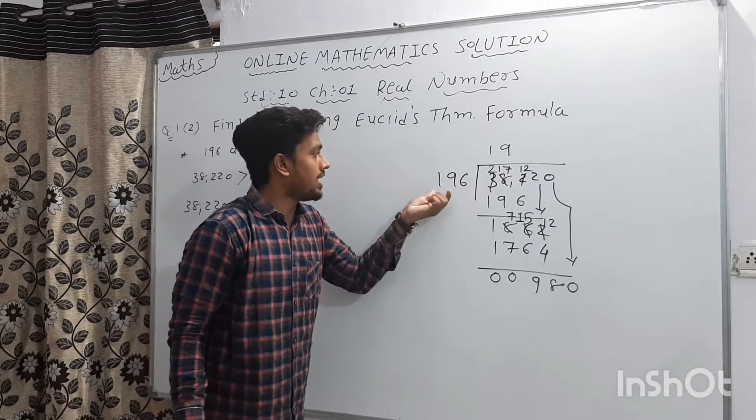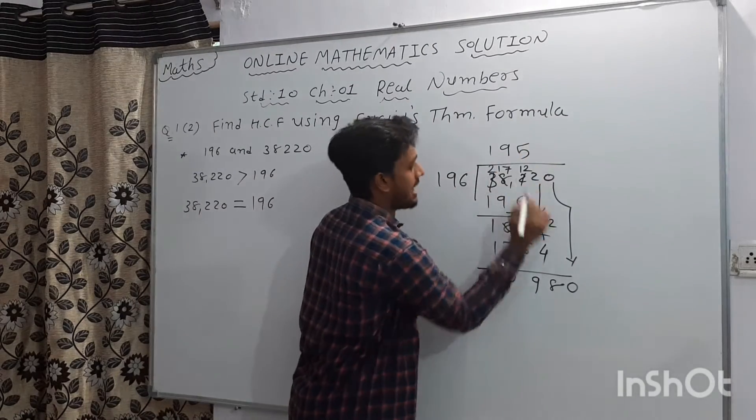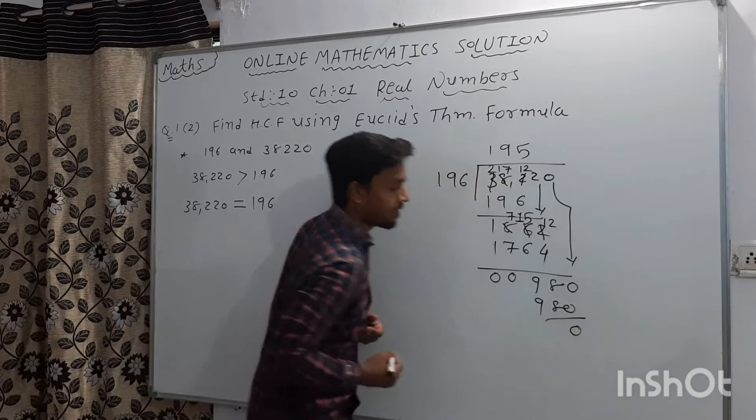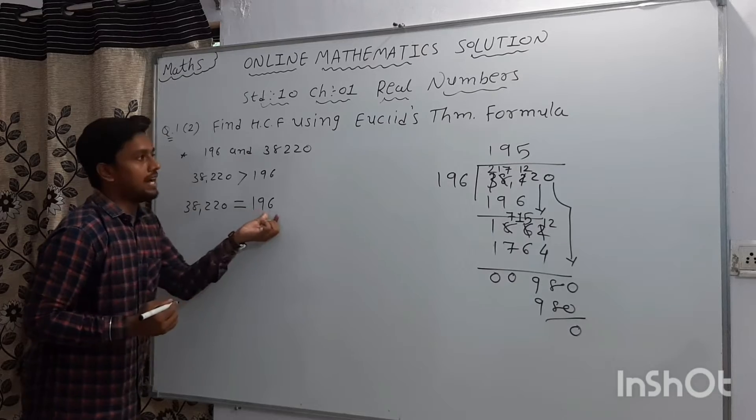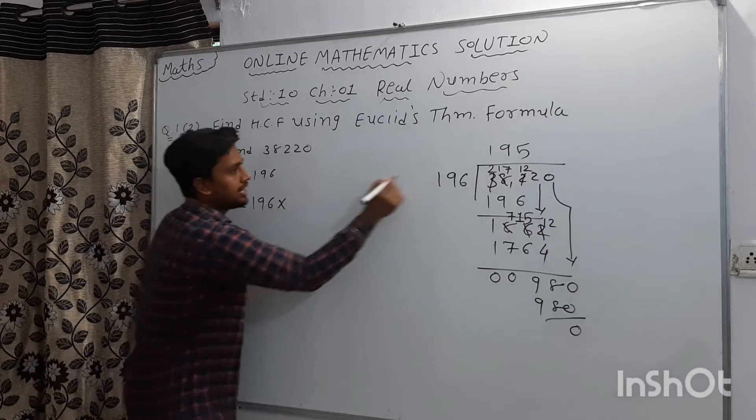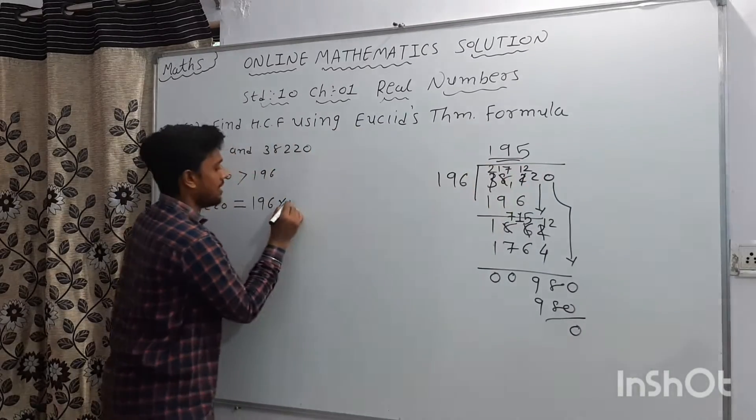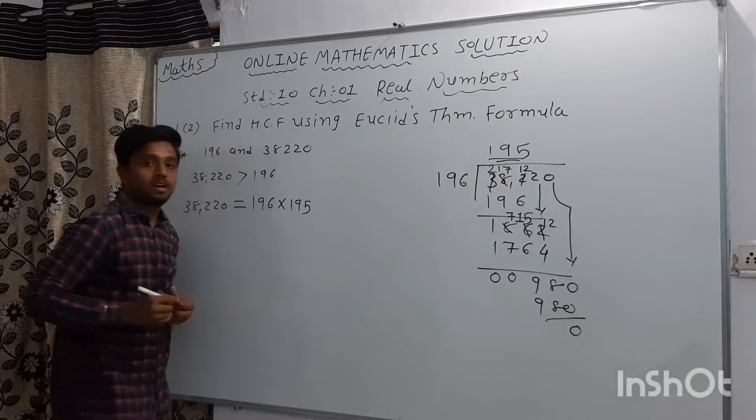196. 980. Okay friends. So, 196. Now, remember that the formula of Euclid's theorem.